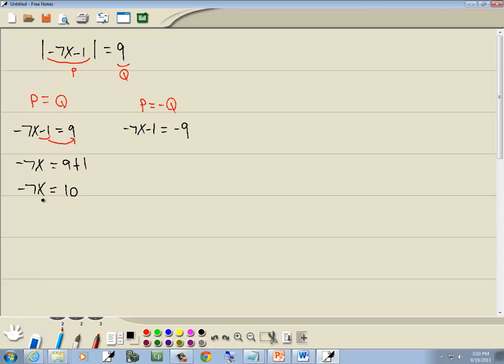Last step in solving linear equations: divide both sides by the number in front of our x, which is negative 7. So we'll divide both sides by negative 7, and that gives us x is equal to negative 10 sevenths.